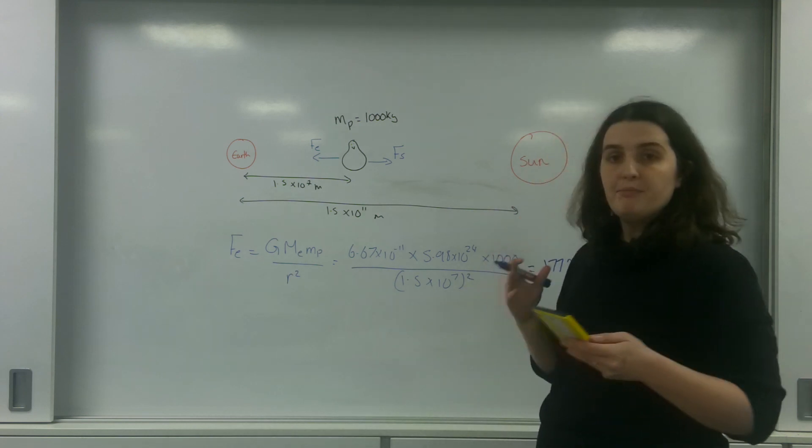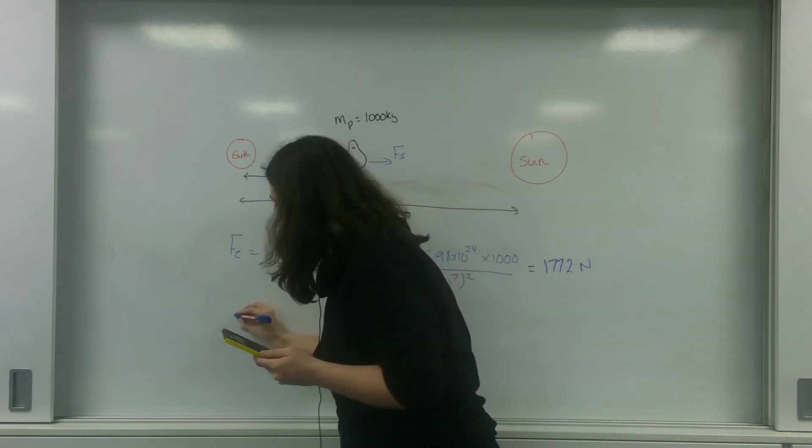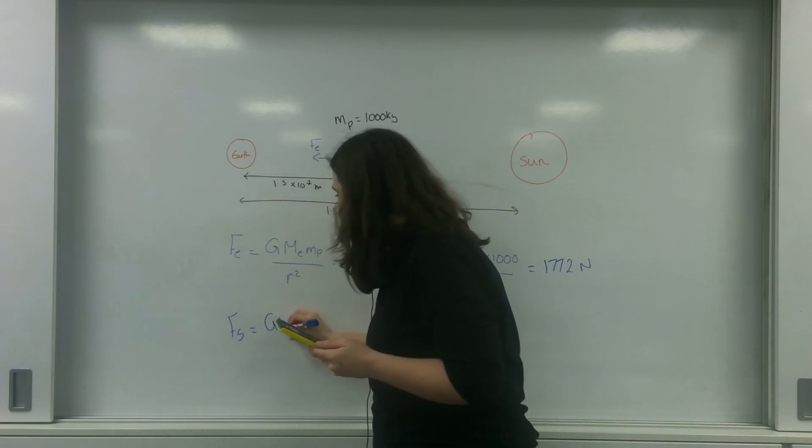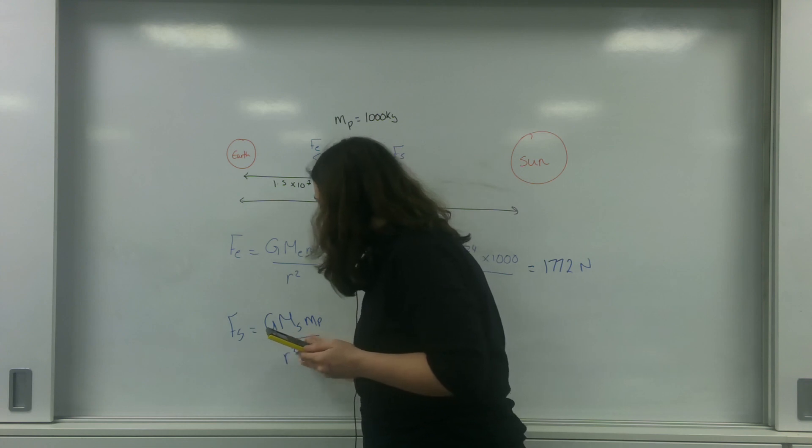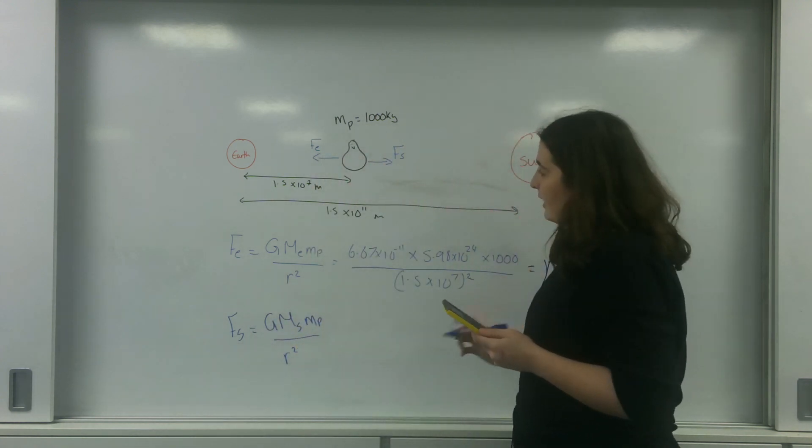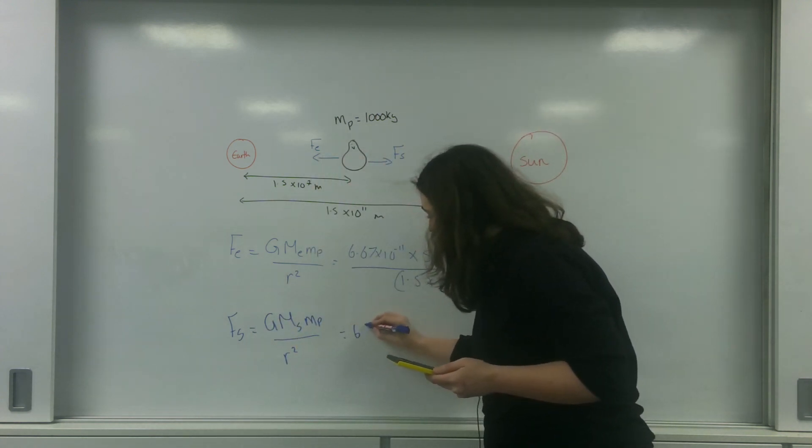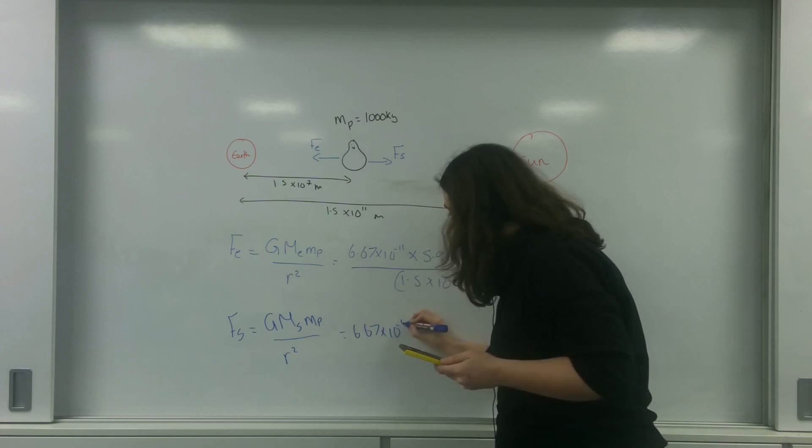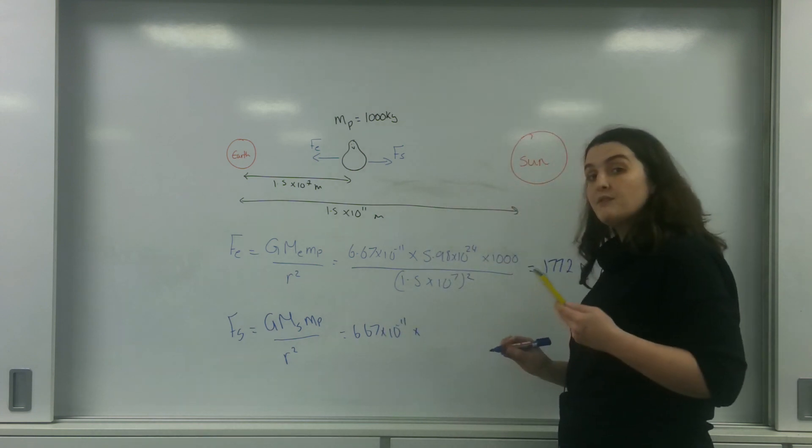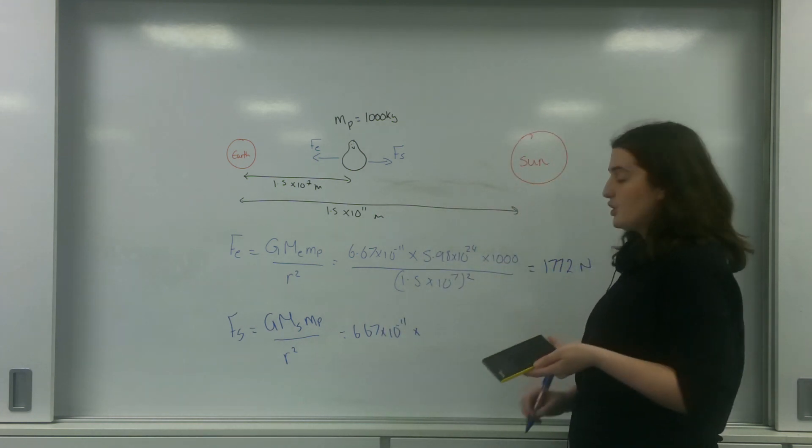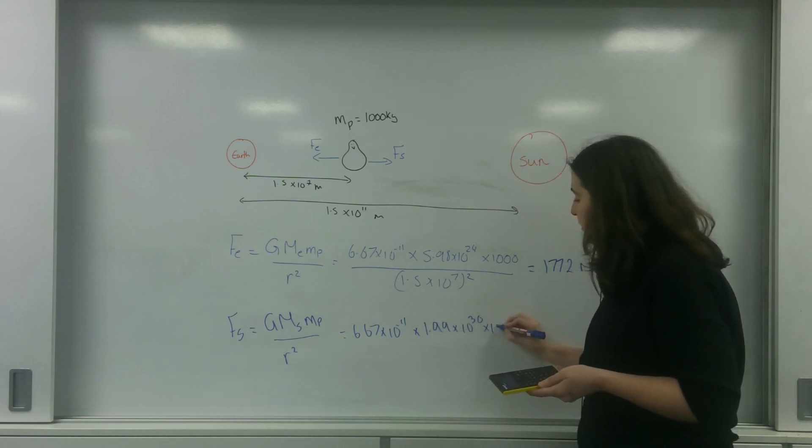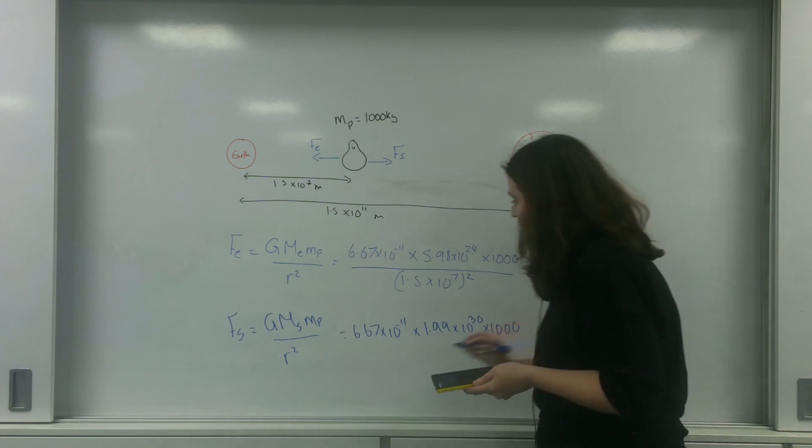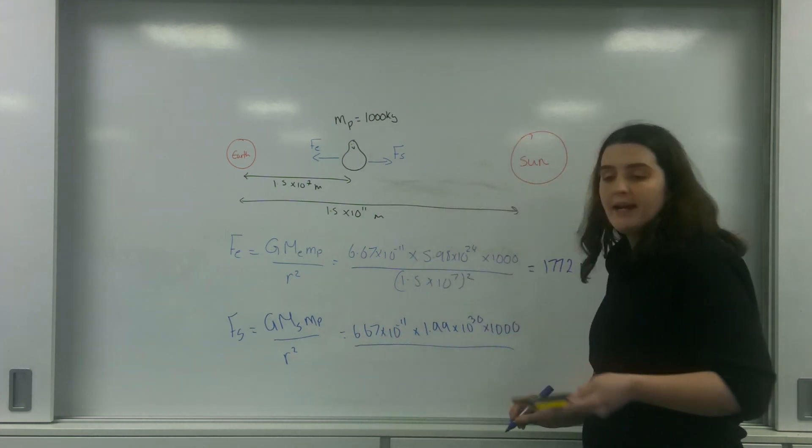Now I'm going to do the same process for the Sun. Big G, M of the Sun, mass of my penguin, over R squared. This is going to be 6.67 times 10 to the minus 11 times the mass of the Sun, which is also on your data sheet, of 1.99 times 10 to the 30 times by the mass of the penguin, and divided by my radius.